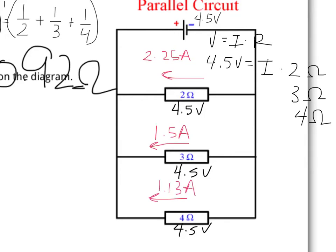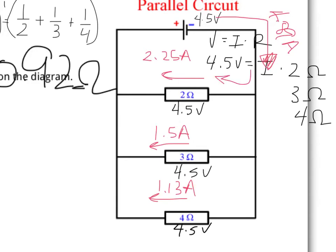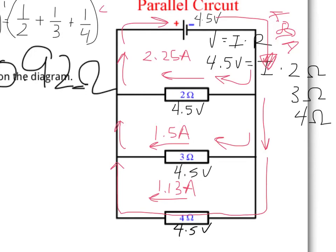These currents came from the battery initially as one whole 4.89 amps. If you add up the three individual branch currents, they add up to 4.89 amps because they come from that original total. When the current approaches the split, 2.25 amps goes toward the first resistor, then 1.5 amps of what remains goes to the second, and 1.13 amps continues along the bottom. Once they meet up again, the currents are additive, returning 4.89 amps to the battery.